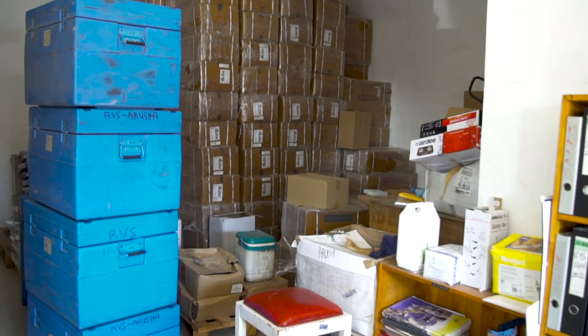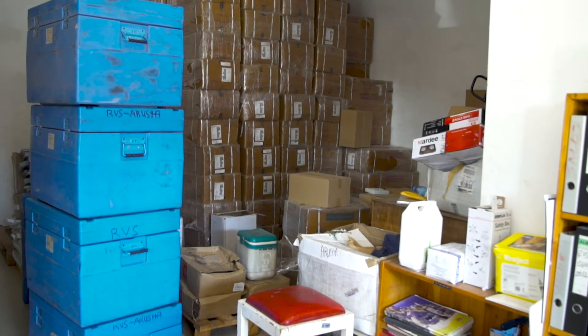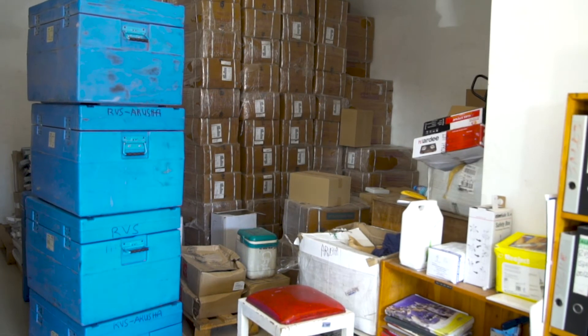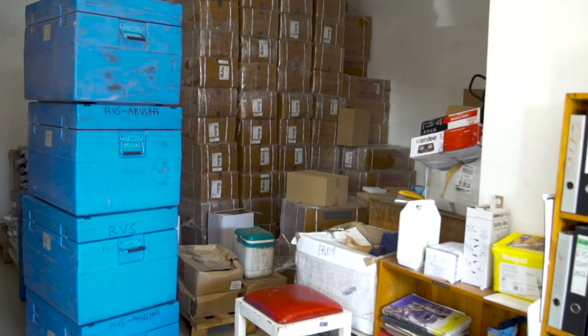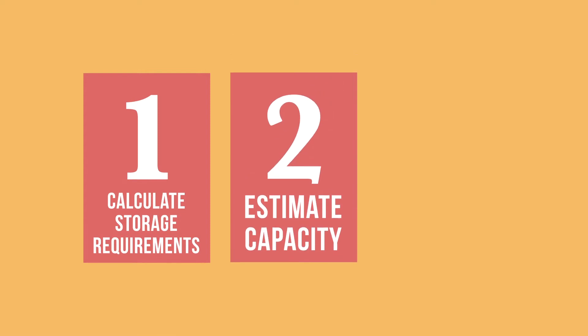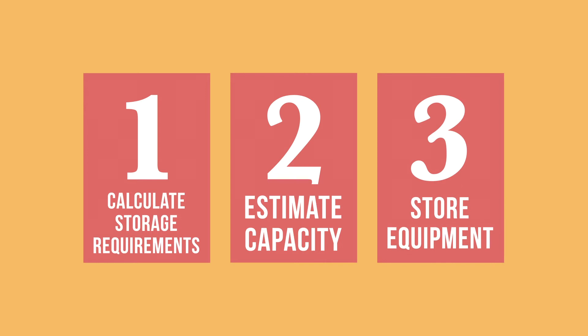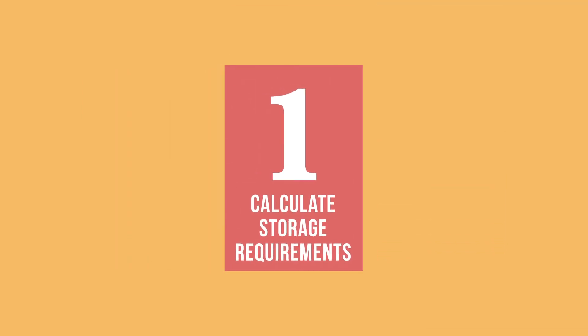Safe injection equipment is stored at ambient temperatures in dry storage. It can occupy a large amount of space, so it is important to make sure there is enough space allocated and that the equipment is stored safely. In this video, we will look at how to calculate the total storage requirements for the safe injection equipment, estimate how much dry storage capacity is available, and properly store the equipment. Your first step is to calculate the total storage volume required for the safe injection equipment.